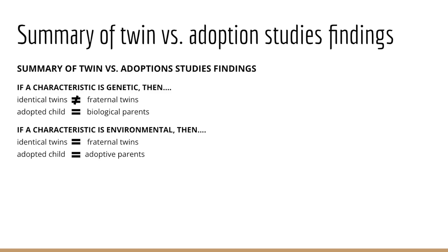To conclude, if a characteristic is genetic, we would expect a higher rate of behavioral expression in monozygotic twins compared to fraternal twins, and similar behaviors in adopted children and their biological parents. In contrast, if a characteristic is more environmental, we would expect the same rate of behavioral expression in identical twins as compared to fraternal twins, and similar behaviors between adopted children and their adoptive parents.